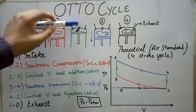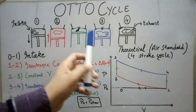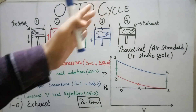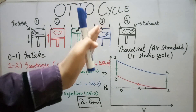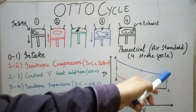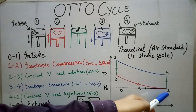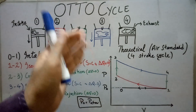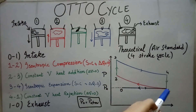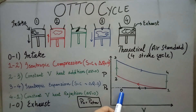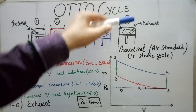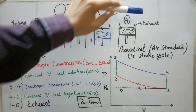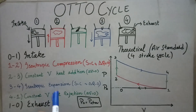From 2 to 3 there is constant volume heat addition by the spark plug theoretically. Then from 3 to 4 there is expansion of the working fluid, and from 4 to 1 there is constant volume heat rejection to the environment. Finally, from 1 to 0 the burnt gases leave through the engine to the atmosphere at atmospheric pressure.